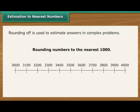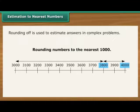Rounding numbers to the nearest thousand means finding which thousand they are nearest to. For example, 3,800 rounded to the nearest thousand is 4,000.